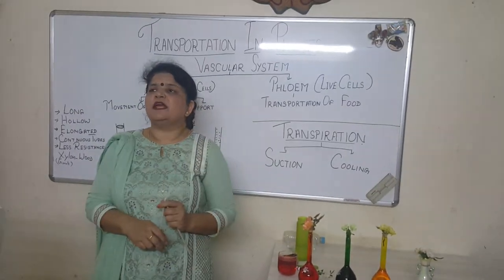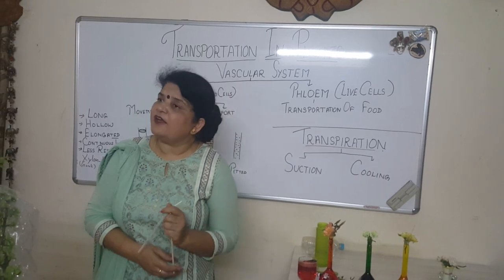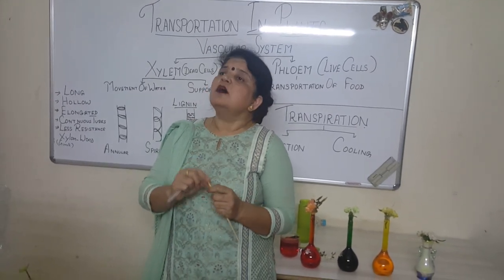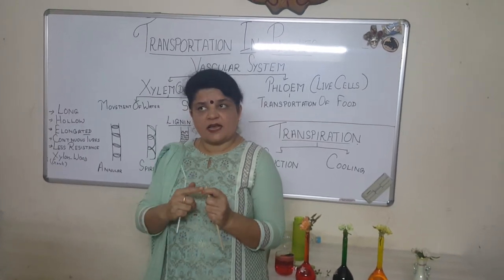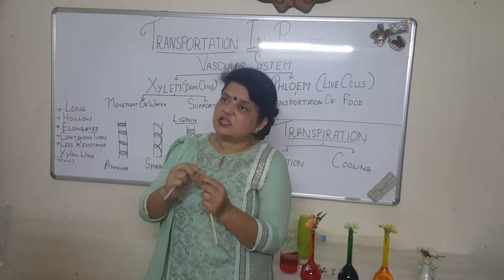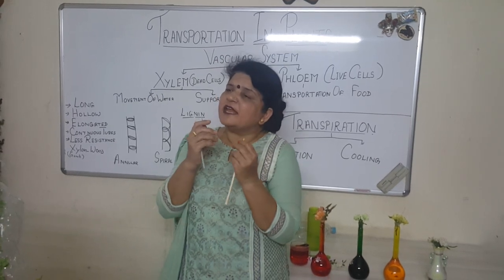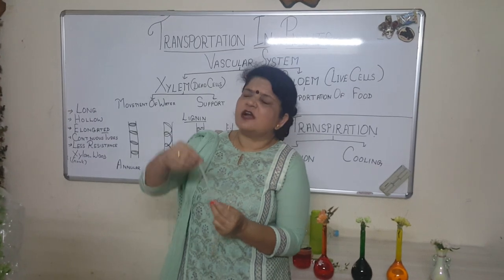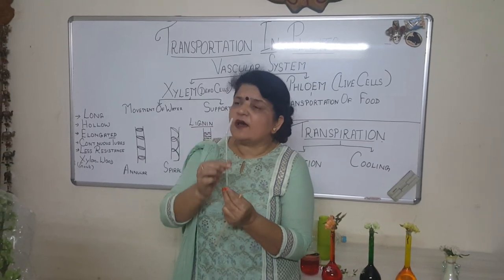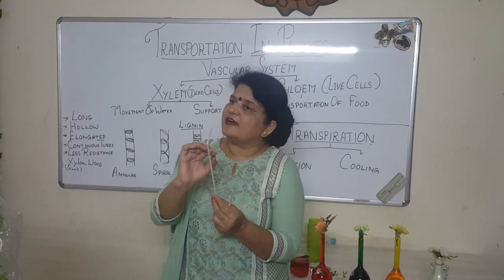Inside a cell there is a dark colored body known as the nucleus — just as a principal controls the whole school, the nucleus controls all the activities of the cell. But when these cells are arranged one above another and the horizontal wall dissolves to form a tube-like structure, everything inside the cell is destroyed — even the nucleus disappears. It becomes a continuous pipe made up of dead cells. We call it dead because all the organelles — the nucleus and whatever is filled inside — everything disappears.